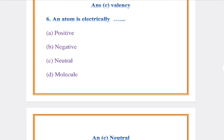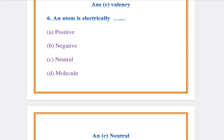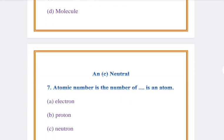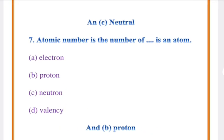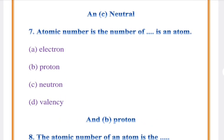Question number 6: An atom is electrically? Answer: C, Neutral. Question number 7: Atomic number is the number of das in an atom. Answer: B, Proton.